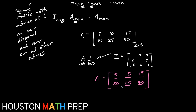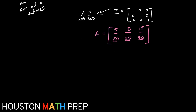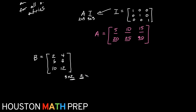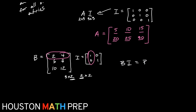If we did a similar thing with matrix B equal to 2, 4, 6, 8, 10, 12 — if this is 3 by 2 — then I would need the identity to match the 2 columns. So my identity is going to be a 2 by 2 identity matrix, with ones in two rows and two columns and zeros everywhere else. So B times our identity matrix should just give us matrix B.